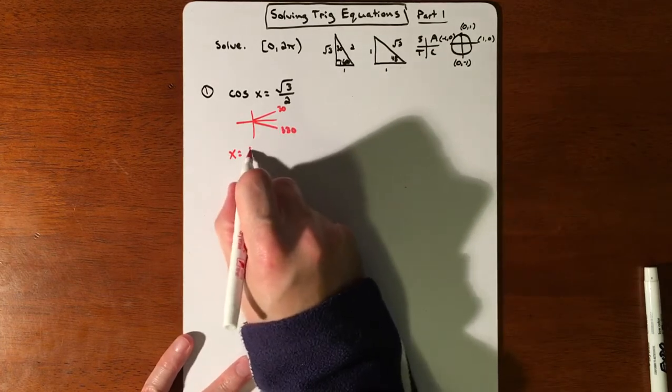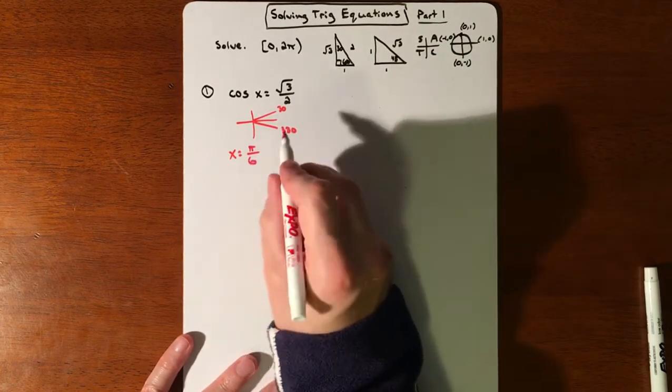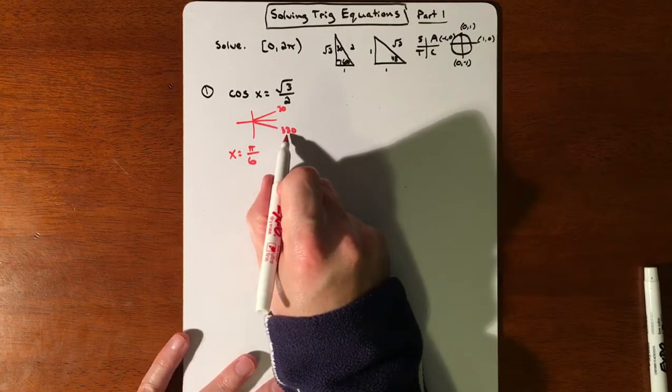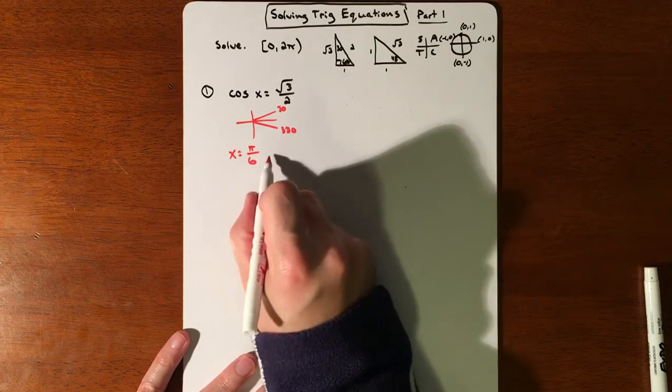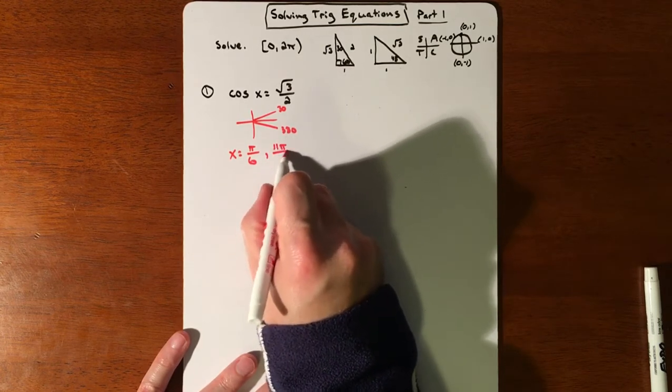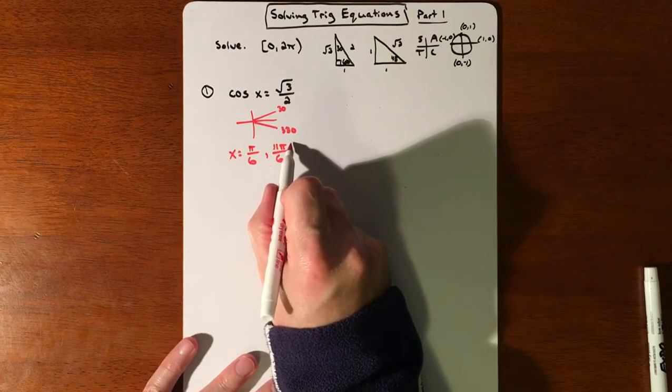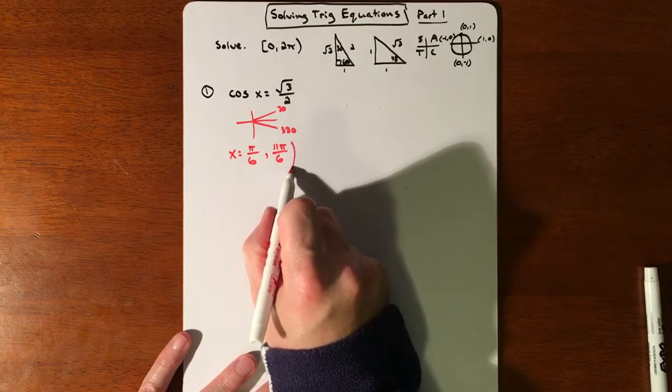30 degrees is pi over 6. And how many 30's does it take to get to 330? How many 3's does it take to get to 33? 11. So it's 11 pi over 6. And that is your first set of answers. So that's the idea. The challenge is we've got to get it to this step, because they're not all going to look like that.